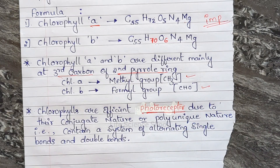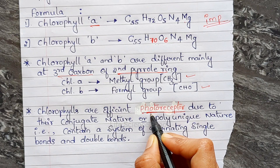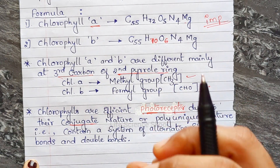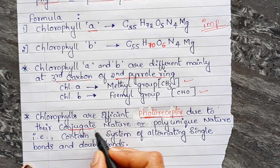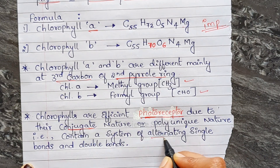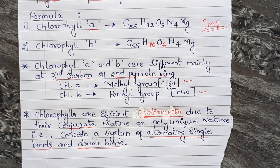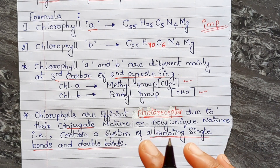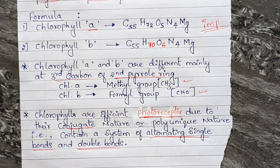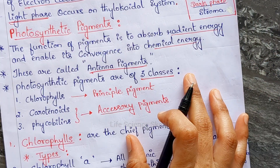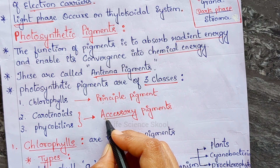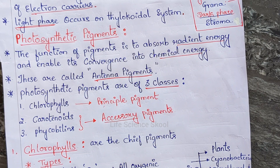Chlorophylls are efficient photoreceptors due to their conjugated or polyenic nature — they contain a system of alternating single and double bonds, which helps in the efficient absorption of sunlight. That covers the chlorophyll structure. In the next video, the other two photosynthetic pigments — carotenoids and phycobillins — will be explained. Thanks for watching.